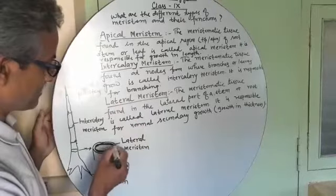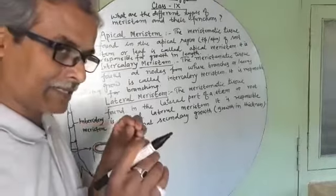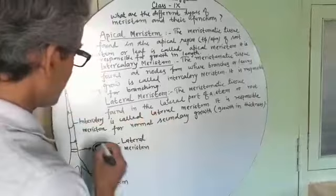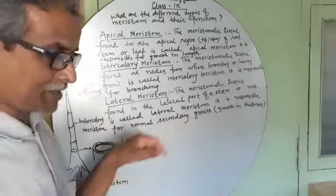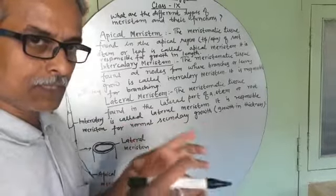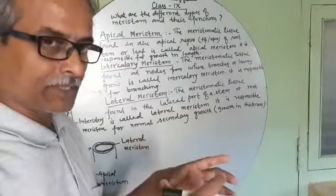The cells of this meristem have ability to divide, and as their number increases the diameter of the stem increases.